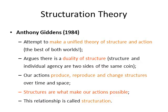The final theory we need to consider is the work of Anthony Giddens, known as Structuration Theory. He attempted to make a unified theory of structure and action — the best of both worlds. The word 'structuration' is basically a portmanteau of structure and action. He argues there is a duality of structure: structure and individual agency are two sides of the same coin, and we need to understand both to understand society. Our actions produce, reproduce, and change structures over time and space, but structures are what make our actions possible — they are the rules of the game, the parameters upon which we play life.